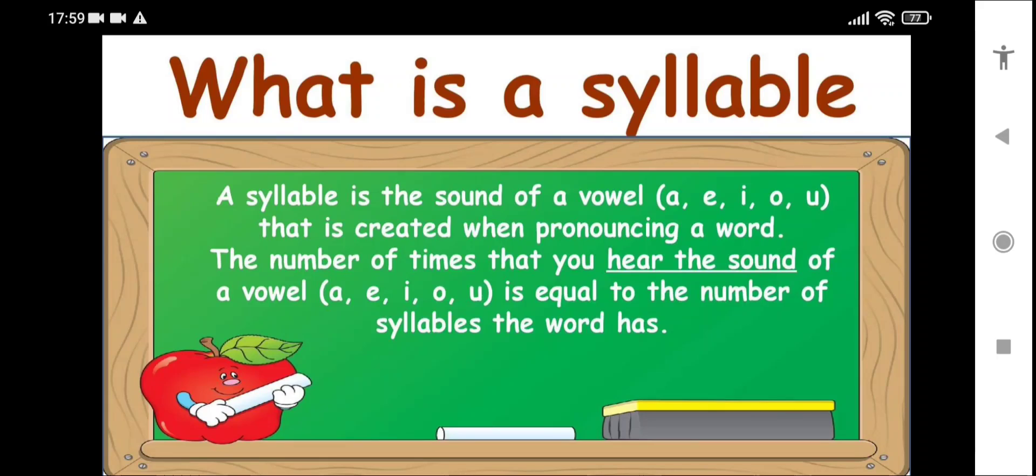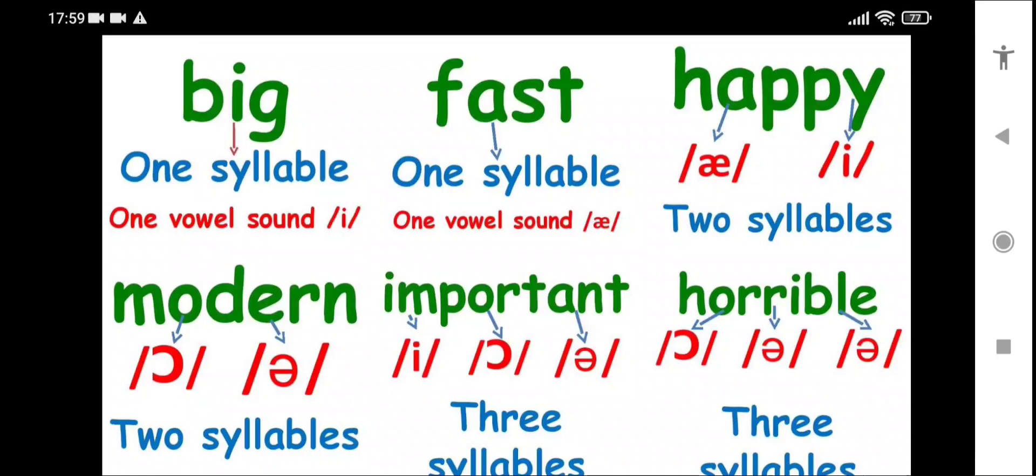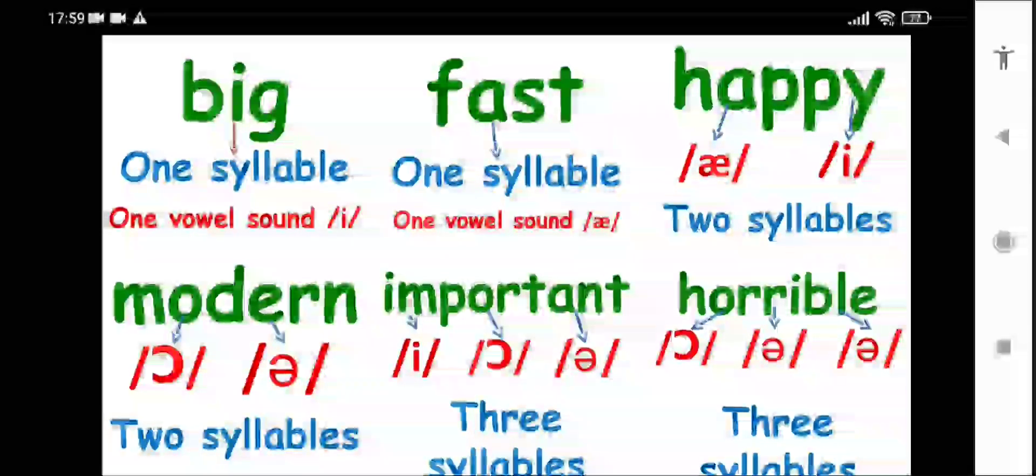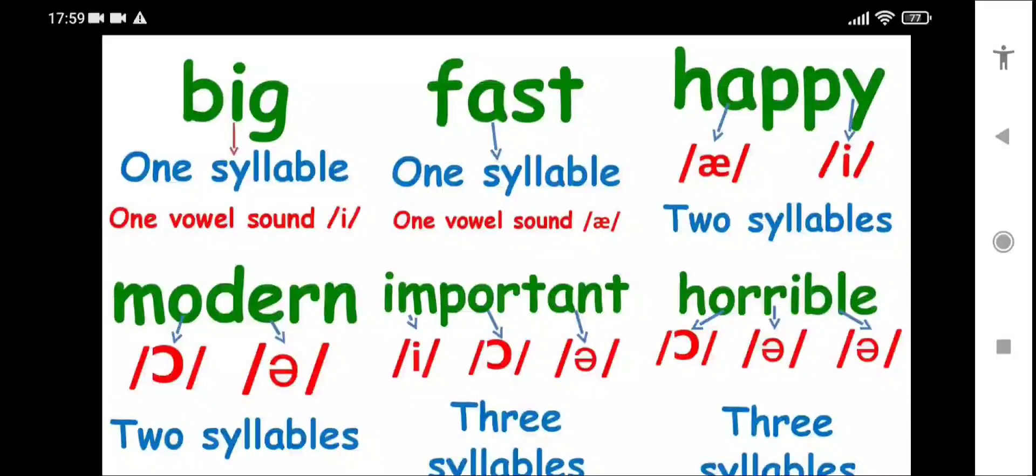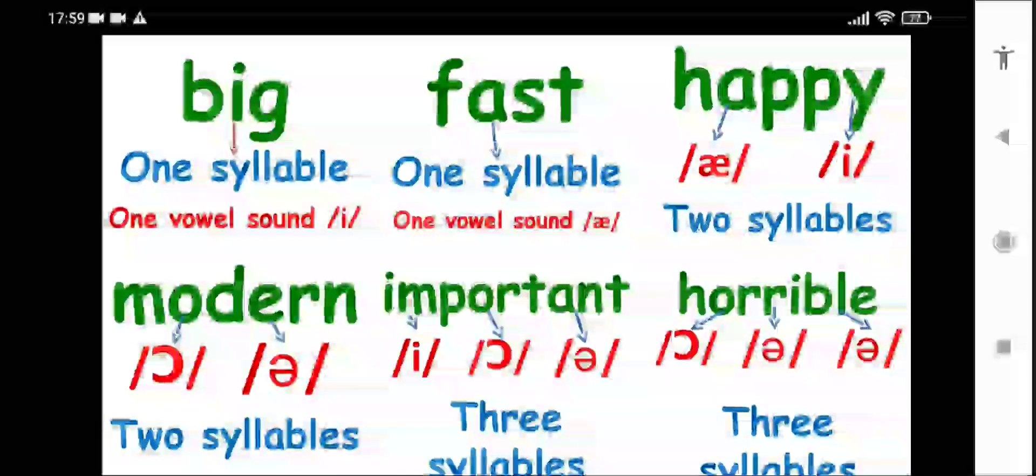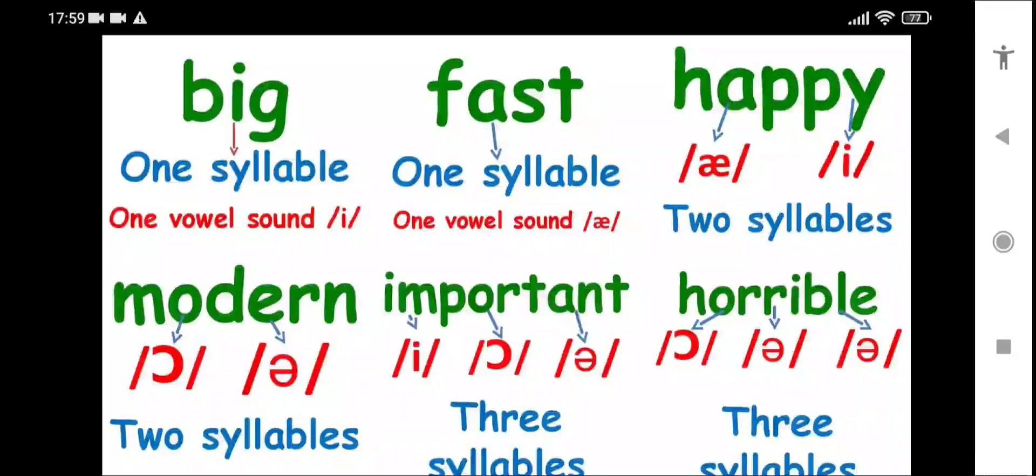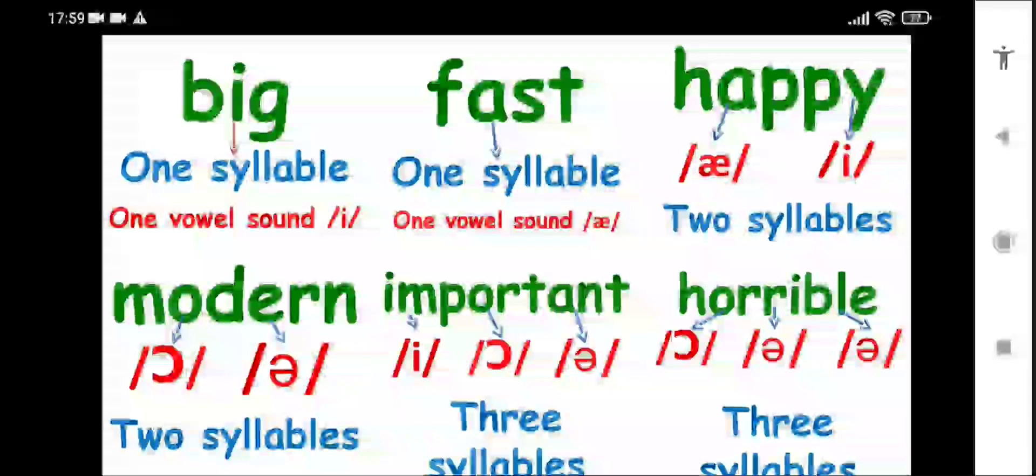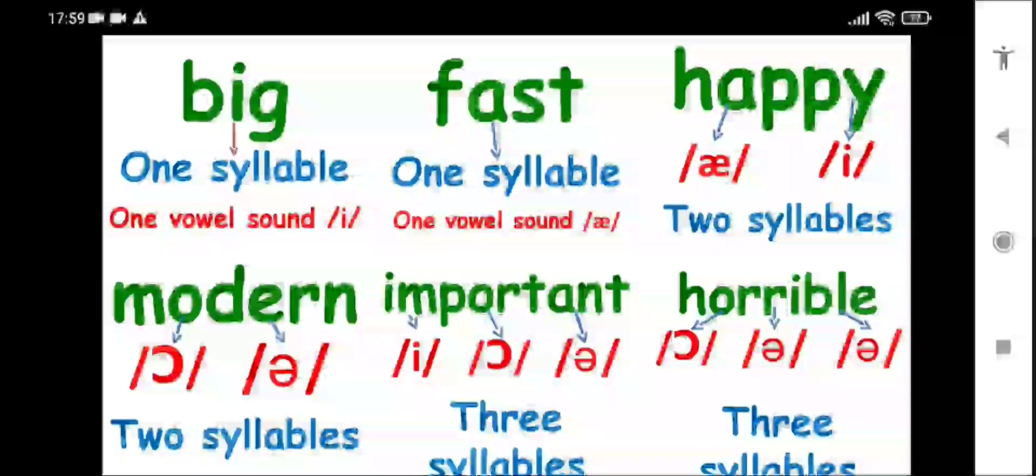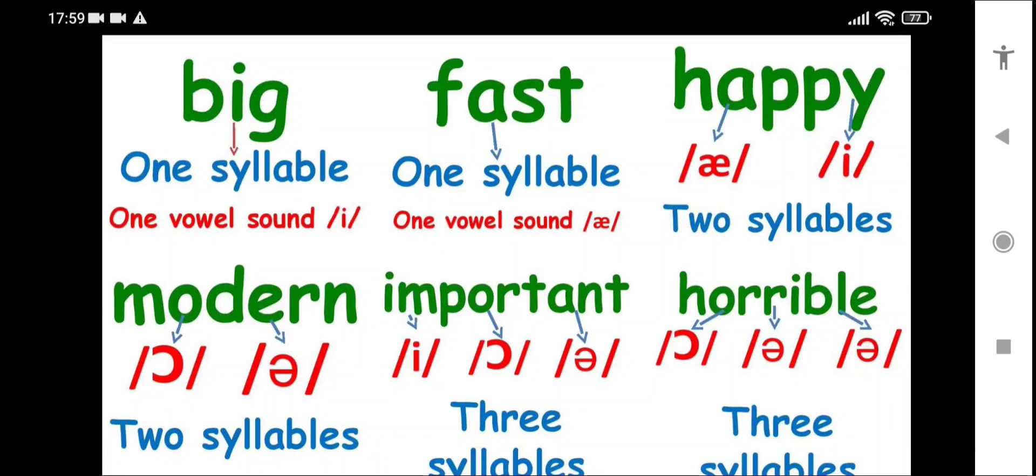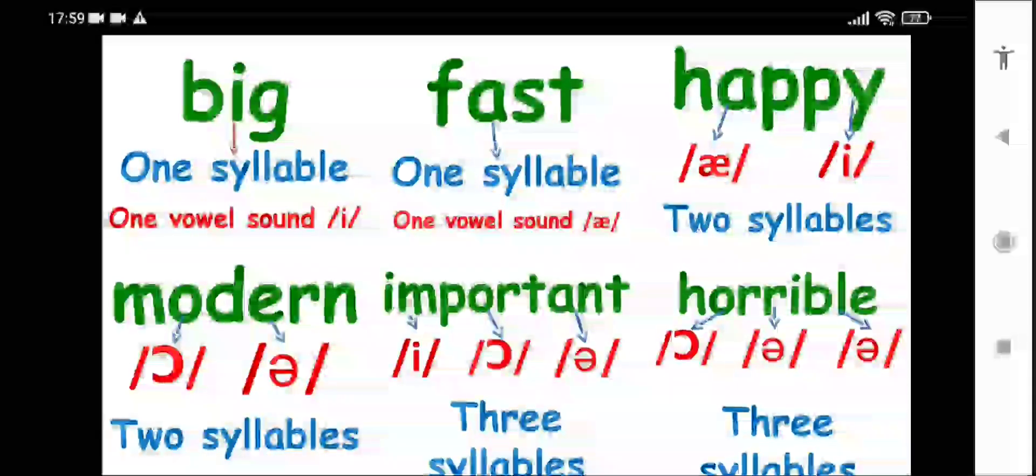Big - big is one syllable, because we have one vowel sound, which is 'i'. Fast - one syllable, one vowel sound. Happy - we have here two syllables. We can divide it into two: hap-py, two syllables. Modern - we have two syllables.